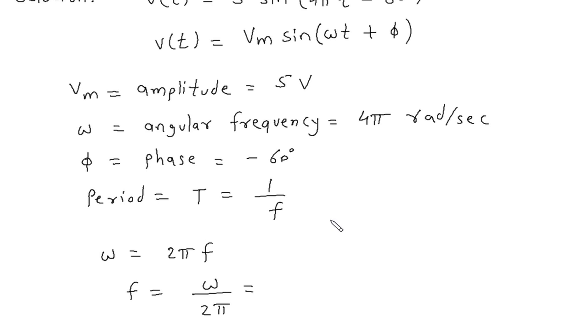So ω is 4π, 4π divided by 2π. So π π will get canceled. Frequency is equal to 2 hertz.